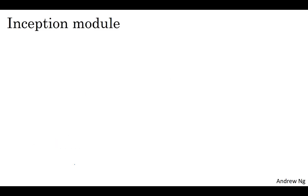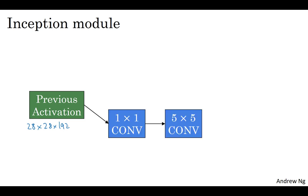So the inception module takes as input the activation or the output from some previous layer. Let's say for the sake of argument, this is 28 by 28 by 192, same as our previous video. The example we worked through in depth was the one by one followed by five by five layer.